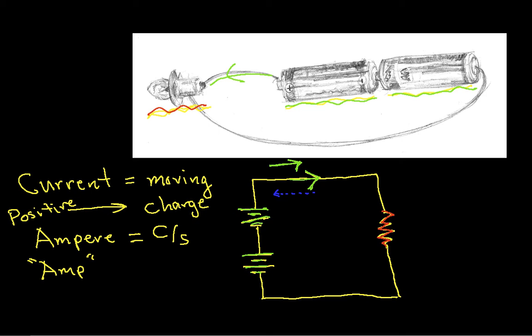The thing that typically makes charge move in a circuit is what we call voltage. Voltage is a potential difference. So I might talk about the voltage between this point and this point in my circuit. This would be the voltage across the light bulb. When I talk about a voltage across the light bulb, I mean that there is an electrical potential difference between this point and this point.